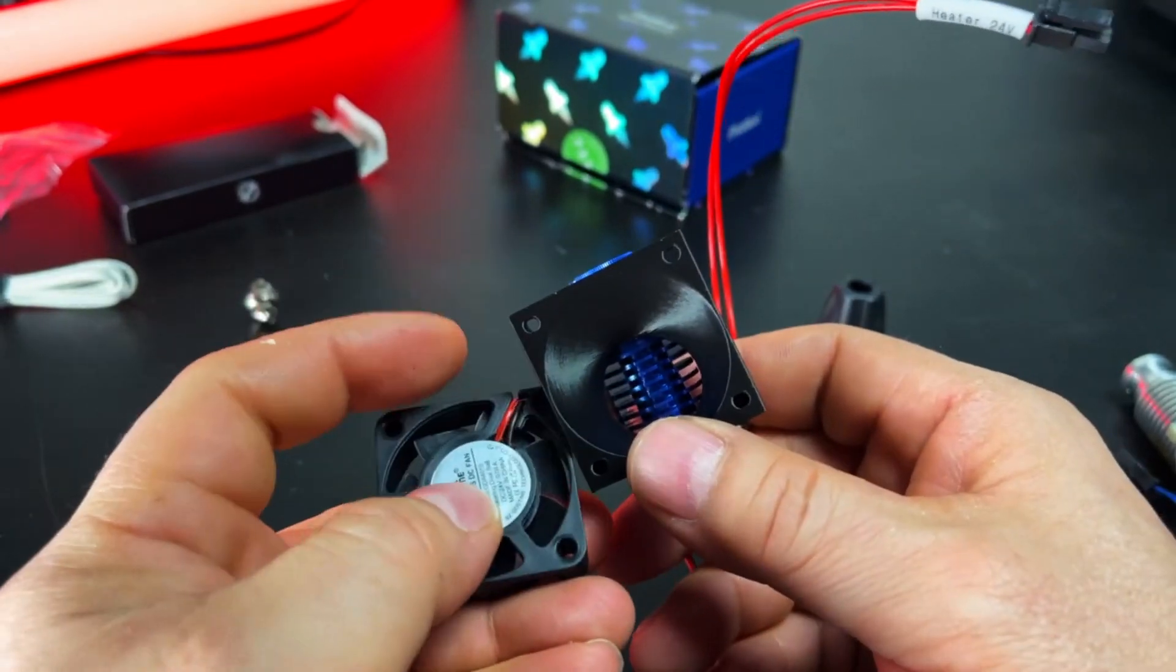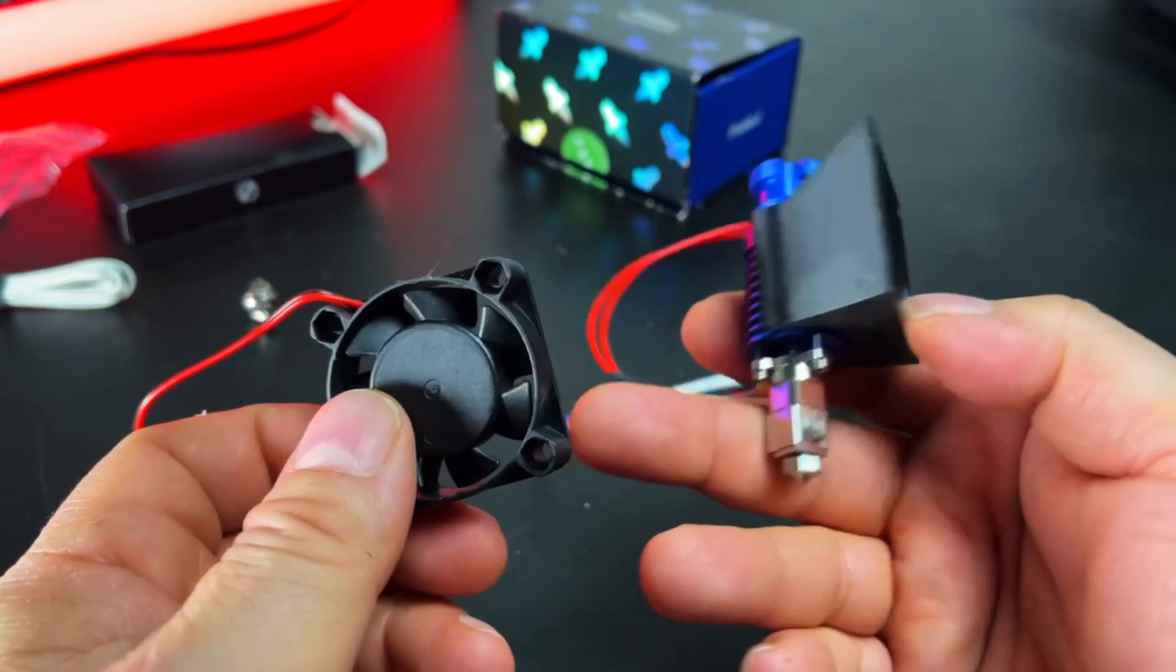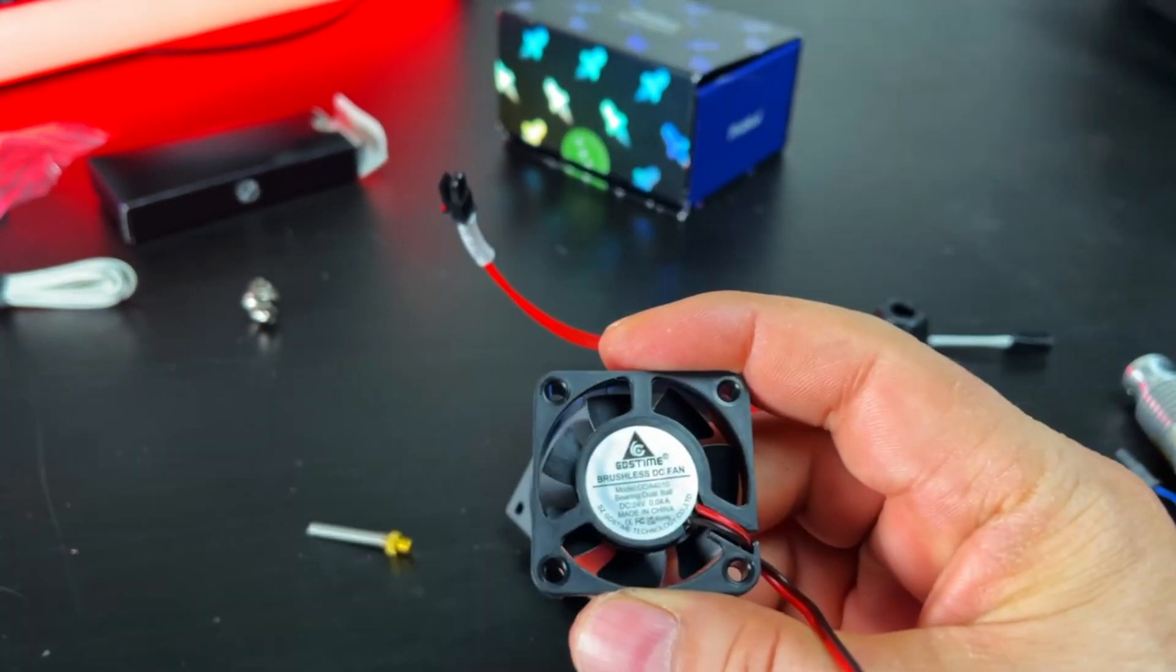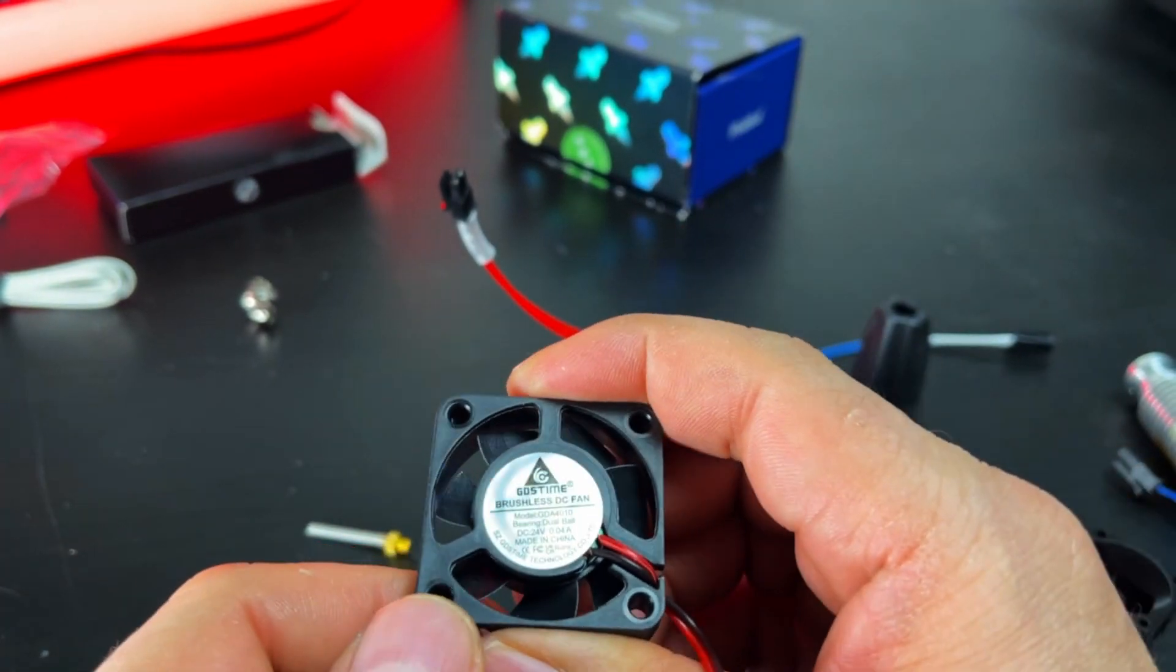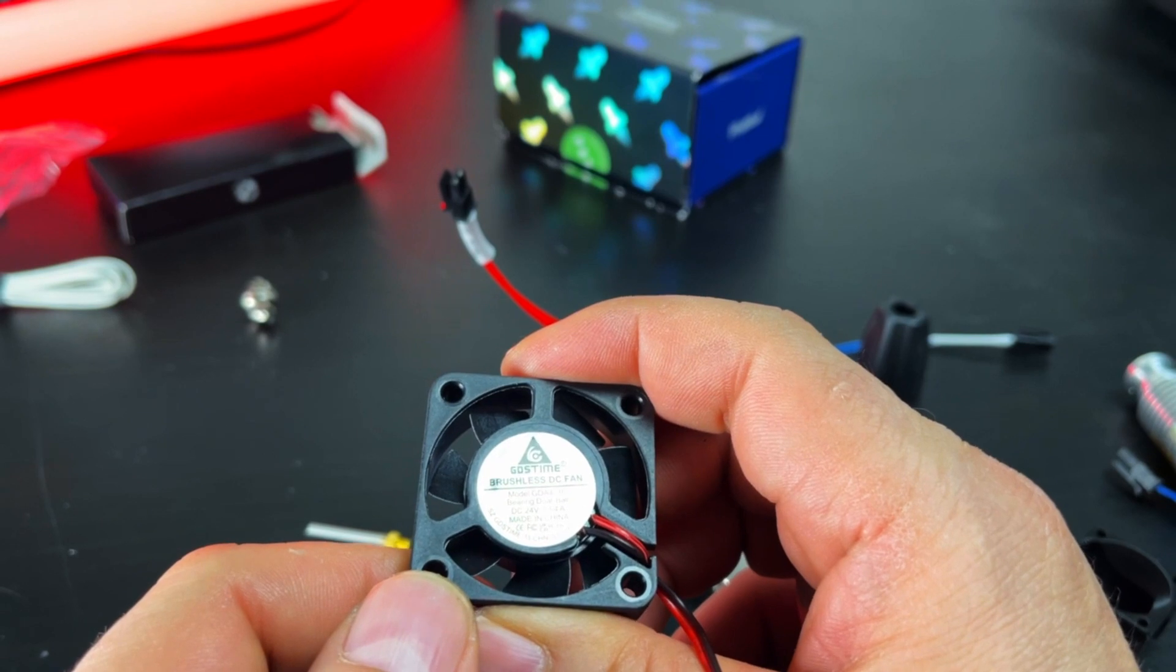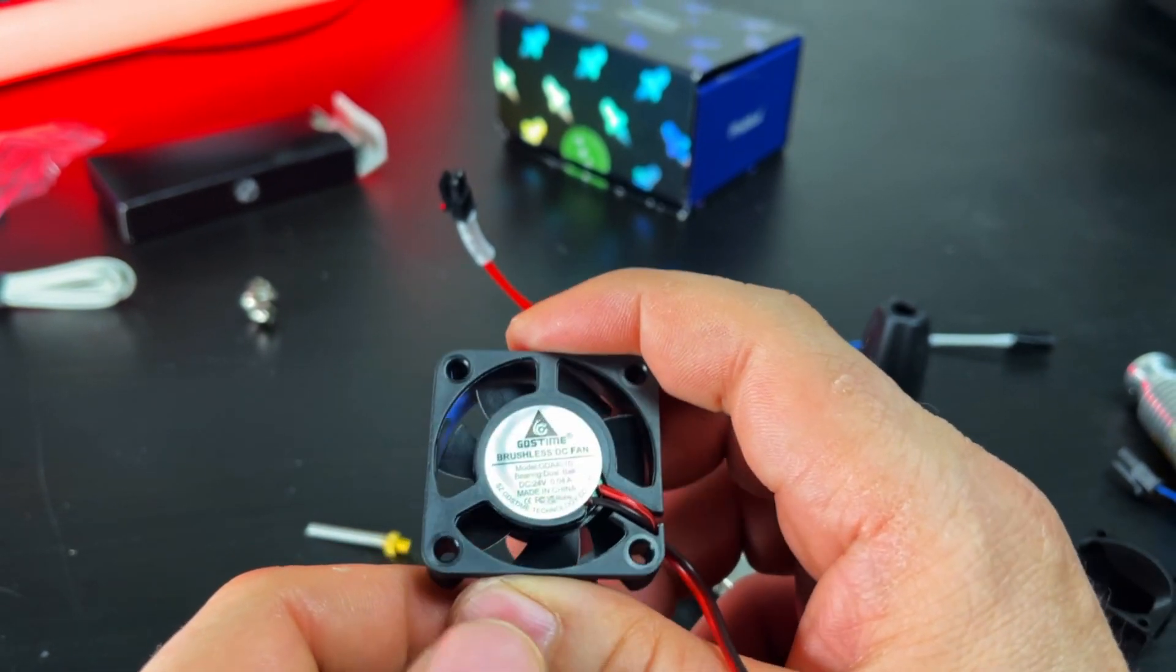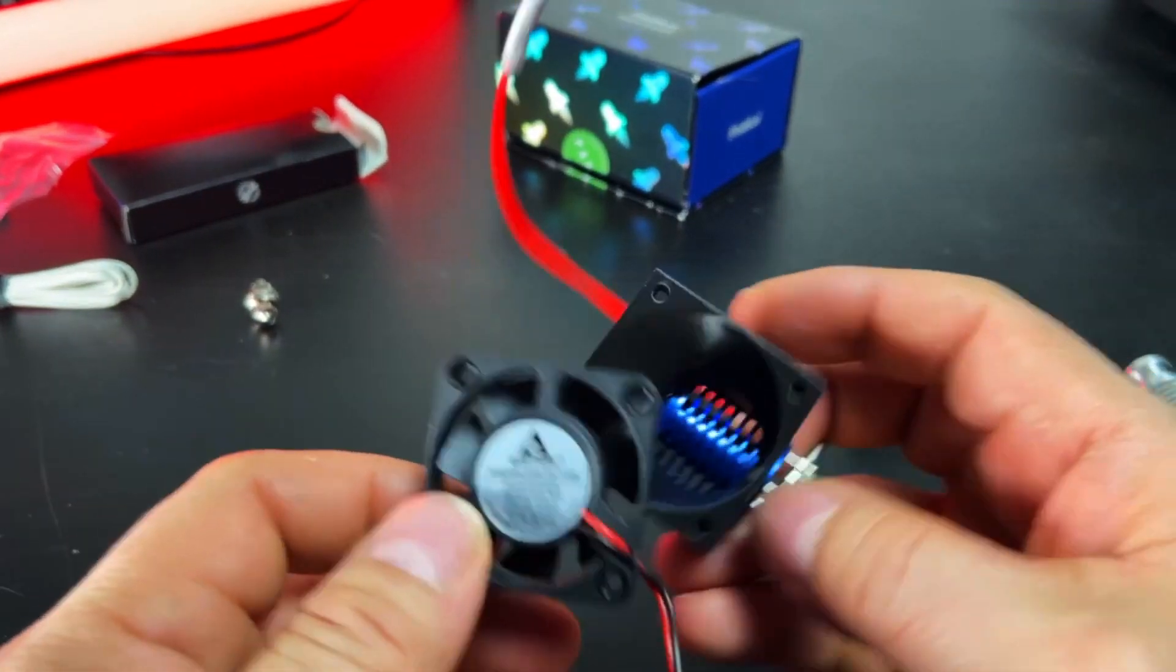Remember, when you're putting your fans, label side is where the fan blows, so you want to make sure you know that. The fan they recommended was GDS Time 40 millimeter fan, brushless, and I'm using 24 volts since my power supply is 24 volts. I'll leave the model number below because it's a long number. But yeah, this will work perfectly together.